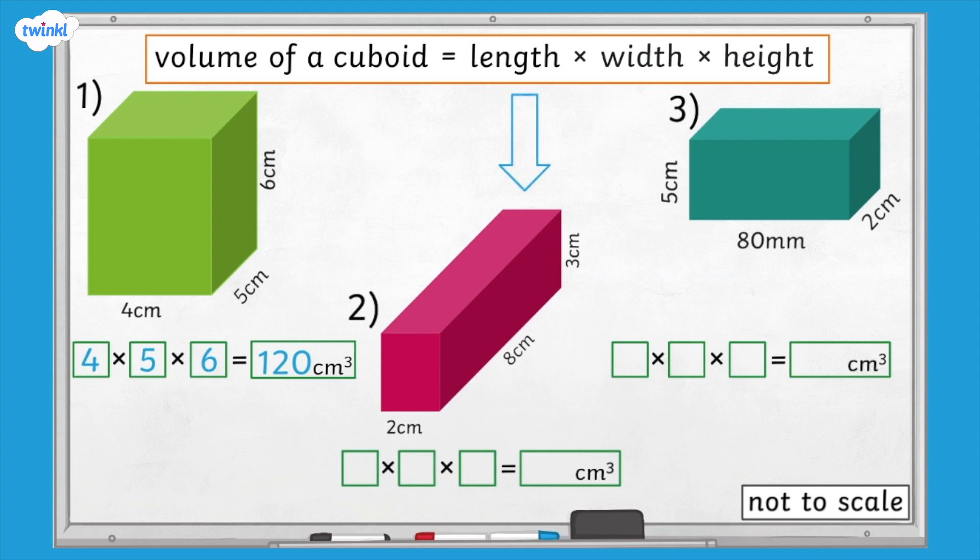This cuboid also has all the side lengths in centimetres, so we can use the formula again. 2 multiplied by 8 multiplied by 3 gives us 48 cubic centimetres.